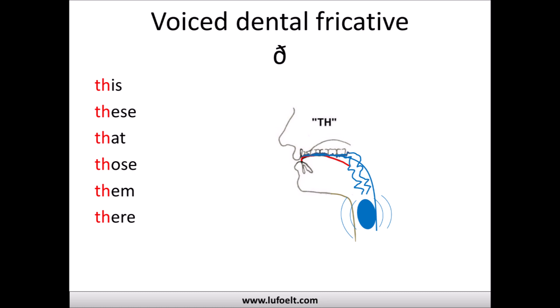Press a little bit on the back of your top front teeth and vibrate your throat. If I just have my mouth open and vibrate my throat, it makes a sound like 'ooh,' but then if I have my tongue and mouth in the right position for the TH sound and I vibrate my throat, it makes the voiced dental fricative sound. This, these, that, those, them, there — like this.